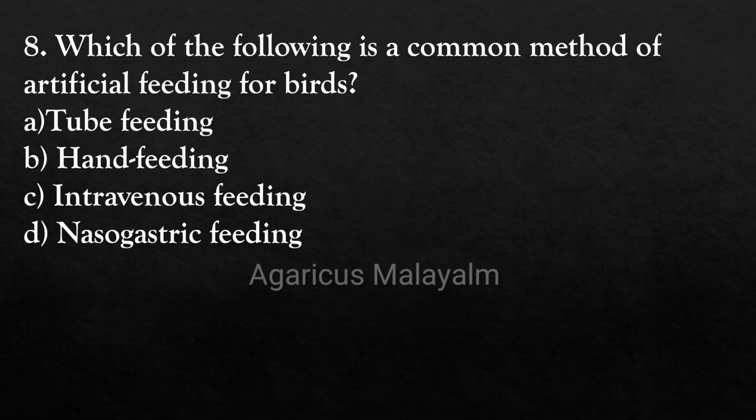Eighth question: which of the following is a common method of artificial feeding for birds? Answer options: option A, tube feeding; option B, hand feeding; option C, intravenous feeding; option D, nasogastric feeding.